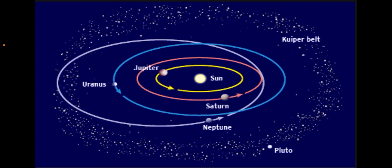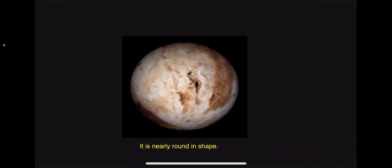Pluto meets the first criteria in that it orbits around the Sun. Pluto satisfies the second criteria as it is nearly a round shape.